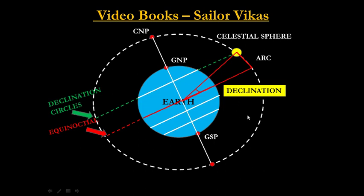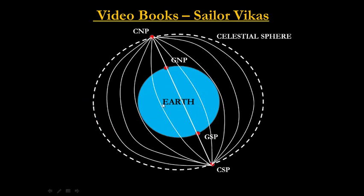The topics are GHA, LHA, and SHA. Basically GHA or any hour angle — they are all measured from the celestial pole. Always remember this: they are the angle at the celestial pole, or they are the arc at the equinoctial.